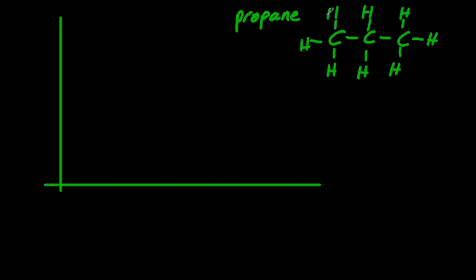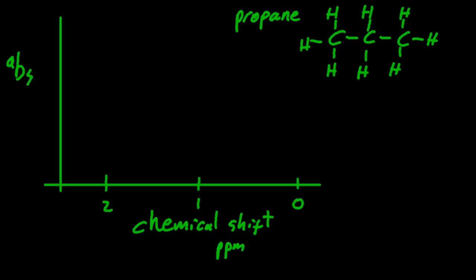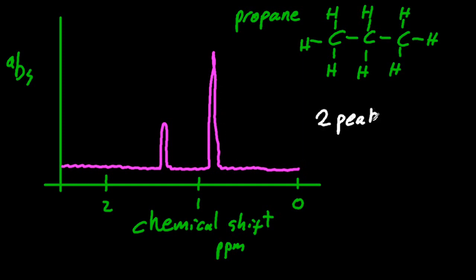Now the spectra for propane, the absorption versus chemical shift, that has two hydrogen environments so we're expecting two peaks. Notice that their area under the peak is different. Two peaks means two different H1 environments.